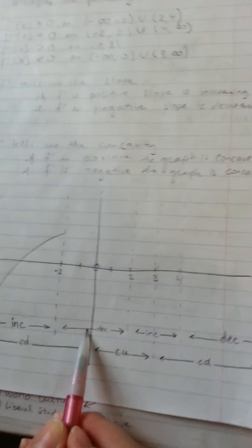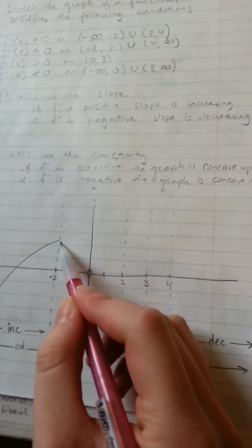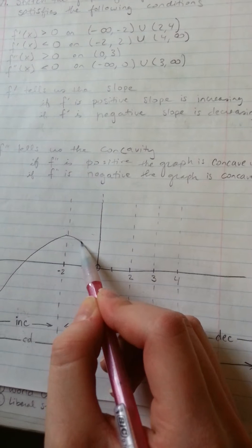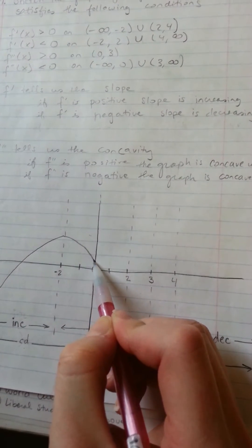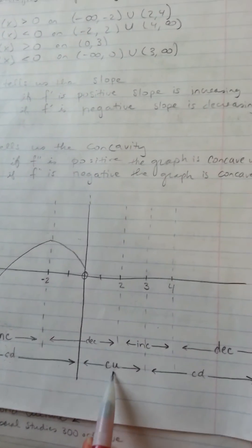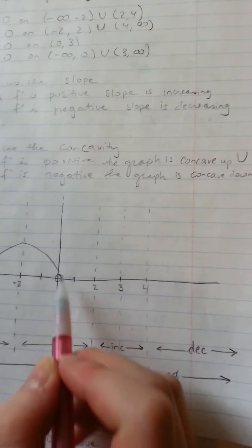The next chunk is going to be decreasing, but we're still concave down. Here we're going to continue to decrease, but now we've got to switch to concave up.